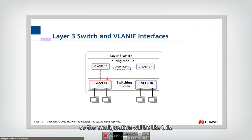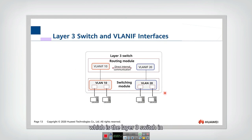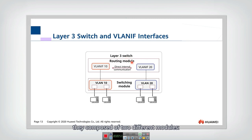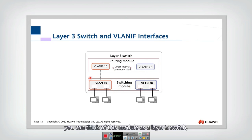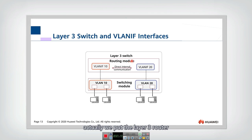So the configuration will be like this. You can see that we still have several PCs belonging to different VLANs. However, we only have one physical device, which is the Layer 3 switch. A Layer 3 switch is actually composed of two different modules: one is the Layer 2 module, which is the switching module — you can think of this as a Layer 2 switch — and another is the routing module, or Layer 3 module, which you can think of as a router. We put the Layer 3 router and Layer 2 switch together into one device.